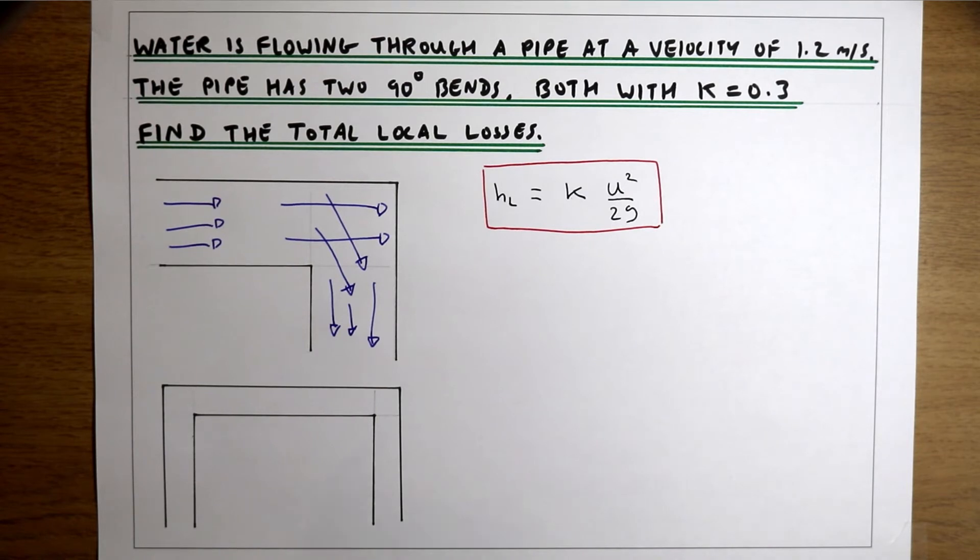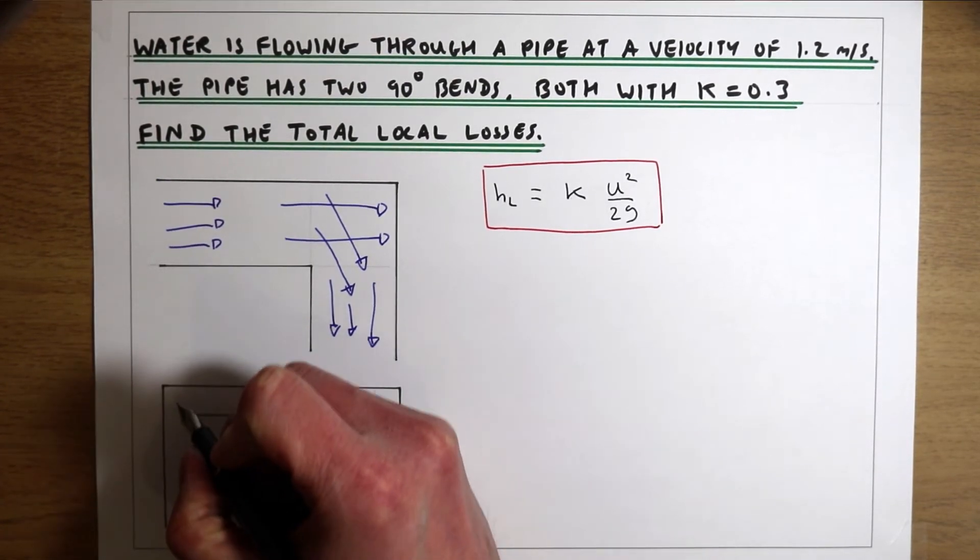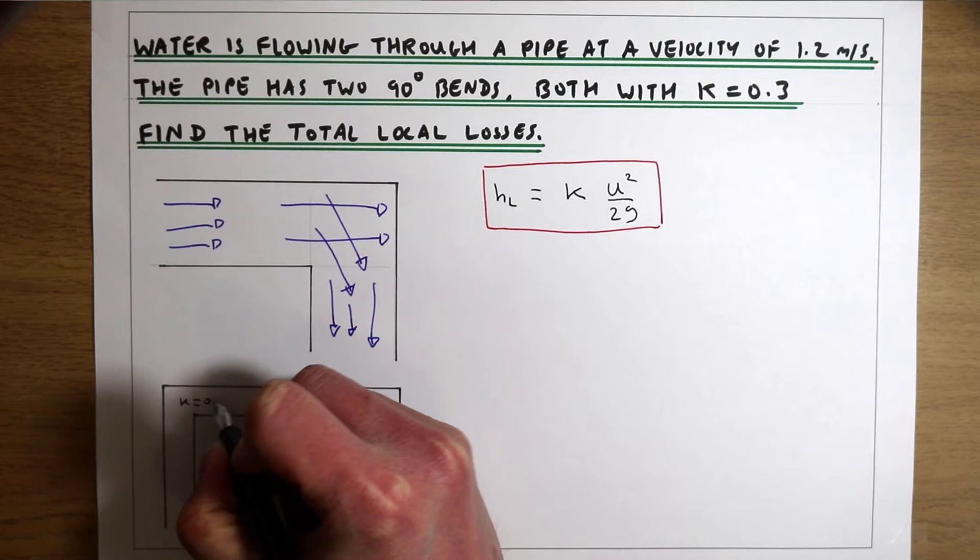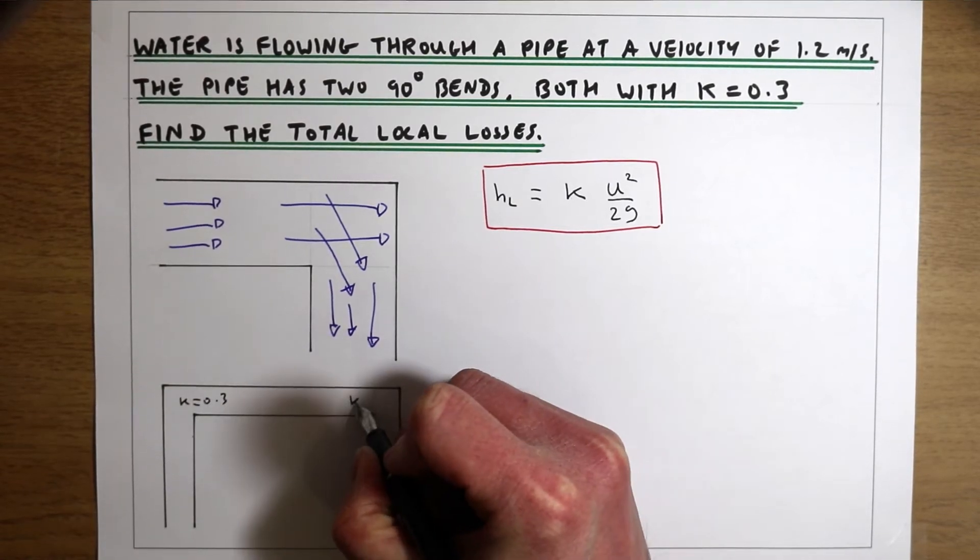And for this example, we have two bends in the section of pipe, and both of those bends have k equal to 0.3.